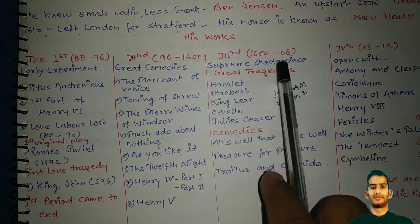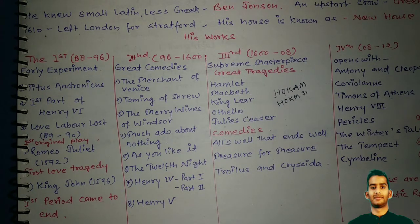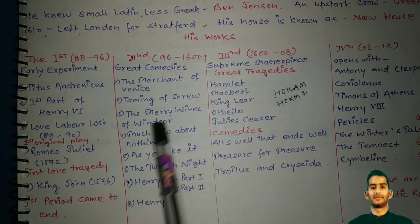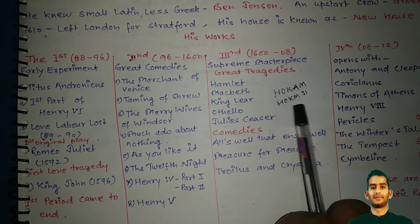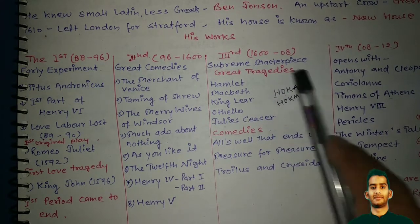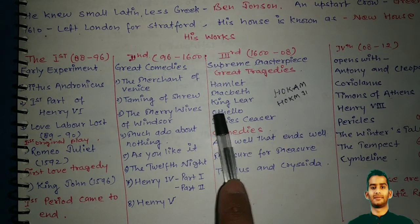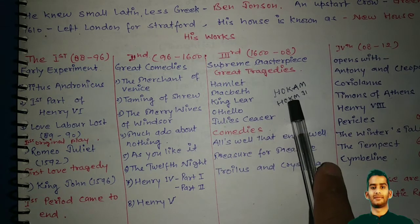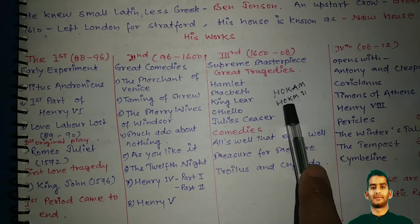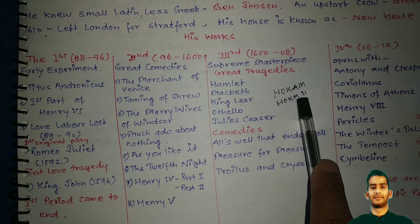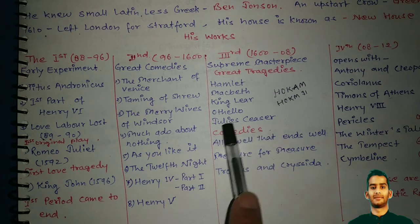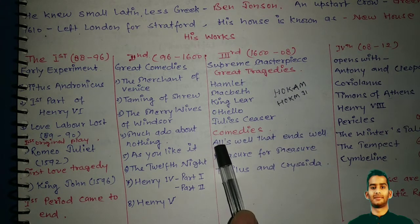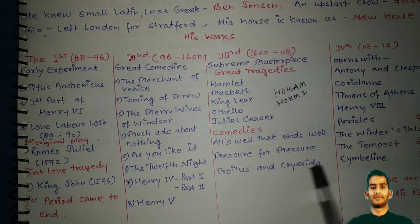The third period was between 1600 to 1608. This was the period when he wrote his great tragedies. Here is a shortcut to remember them — HOKUM: Hamlet, Othello, King Lear, Macbeth, and Julius Caesar. Three comedies were also written in this period: All's Well That Ends Well, Measure for Measure, and Troilus and Cressida.